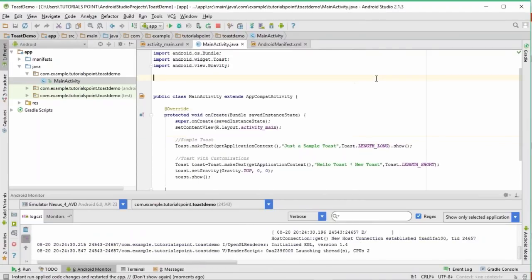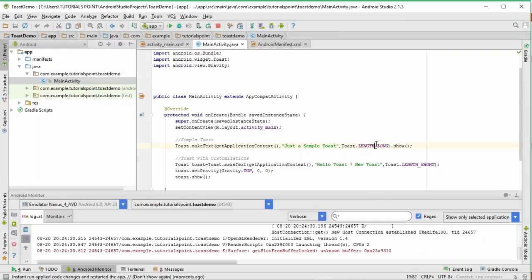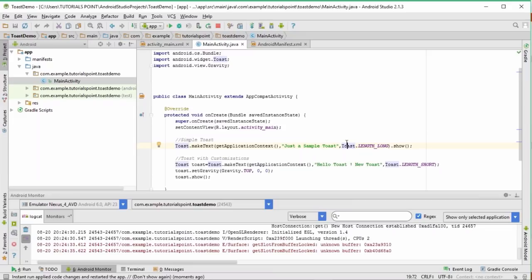See, it shows just a sample toast, right? The length was long, so it will be shown for some longer period, otherwise it will be shown for a very small period.